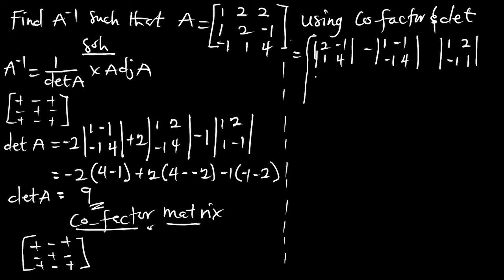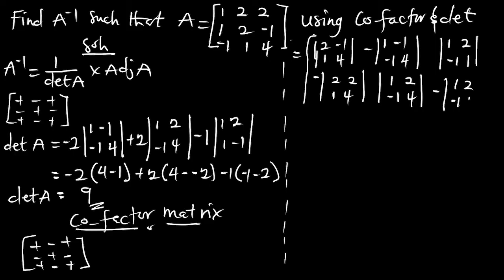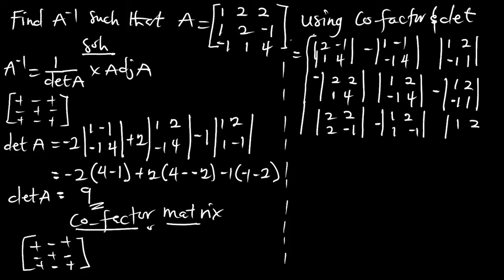The second row starts with negative sign, and the submatrix is 2, 2, 1, and 4. The next entry (positive) gives submatrix 1, 2, negative 1, and 4. The negative entry gives submatrix 1, 2, negative 1, and 1. The last row: the first entry gives submatrix 2, 2, 2, negative 1. The next gives submatrix negative 1, 2, 1, and negative 1. The final entry gives submatrix 1, 2, 1, and 2.